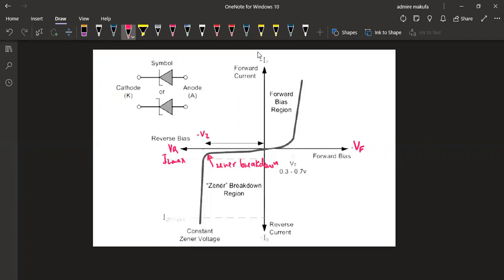So here we have got our Zener breakdown at this point. We've got the Zener breakdown region that we are given, and this is going to be IZ max. Here we have got IZ max, that is the maximum Zener current.